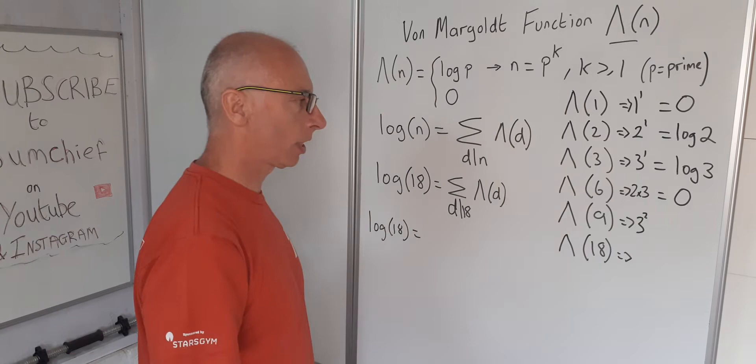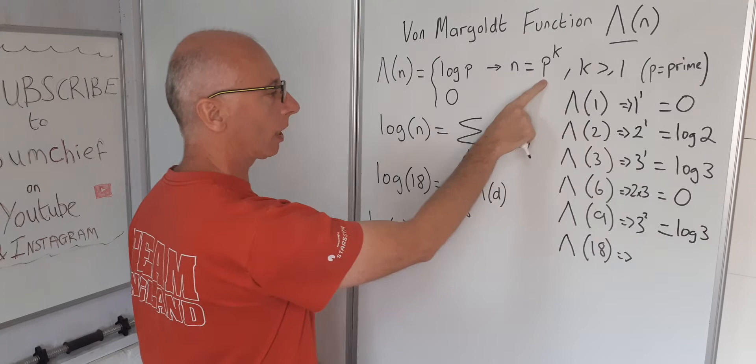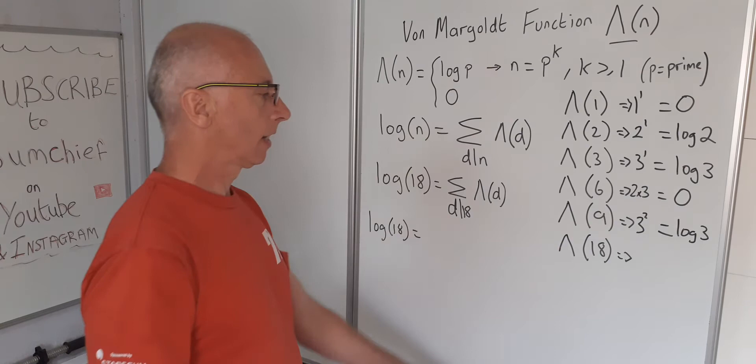9. Well 9 logarithm, that's a perfect square. The square root of 9 is 3, so 3 squared. In which case we then get log of 3. P is 3, k is 2, so log of P which is 3.